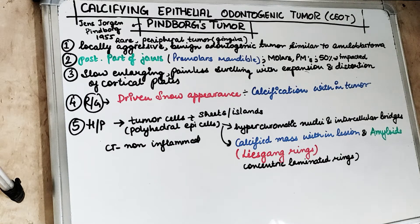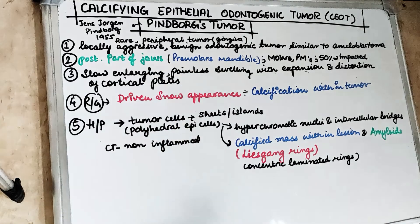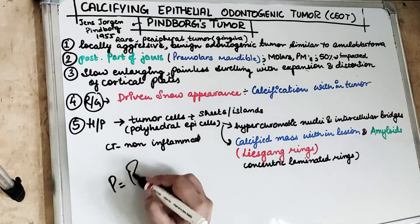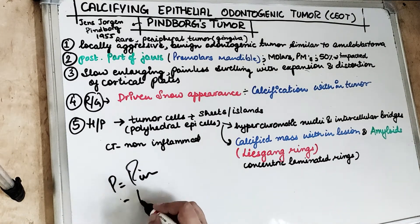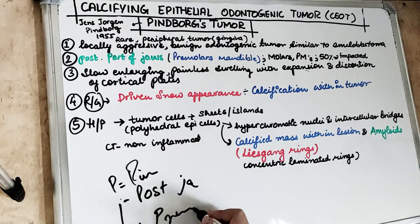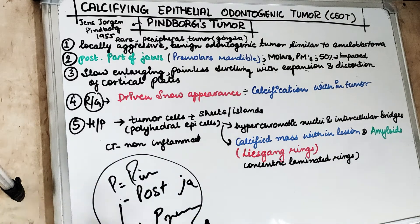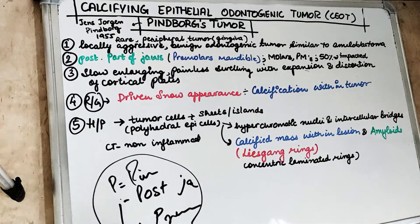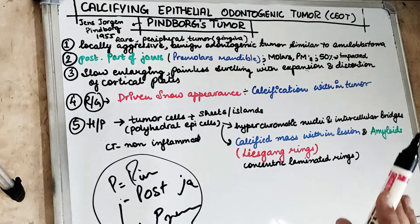The calcifying epithelial odontogenic tumour is rare and usually a benign but locally aggressive tumour — though less aggressive than ameloblastoma. You can remember it using the letter P: P for Pindborg, P for posterior mandible, and P for premolars, since it tends to occur in the posterior jaw region.